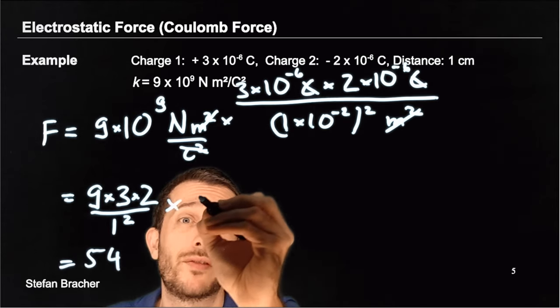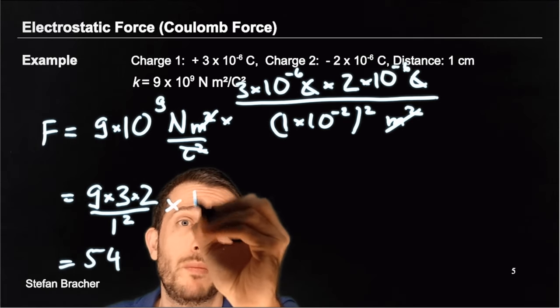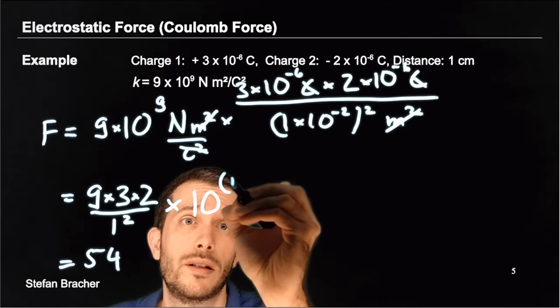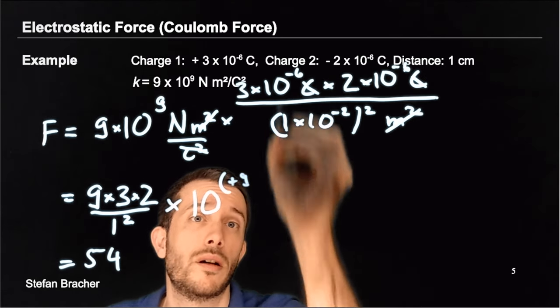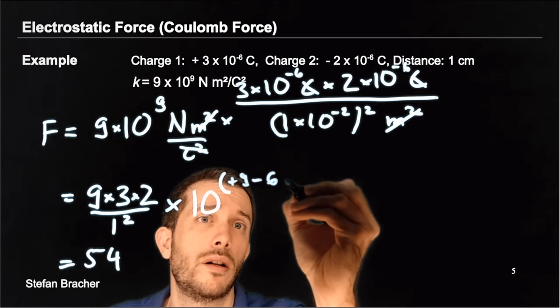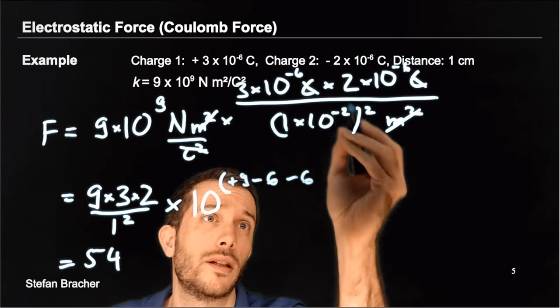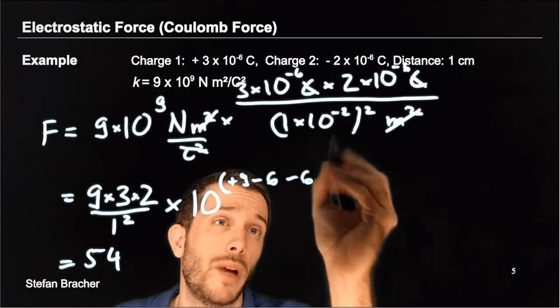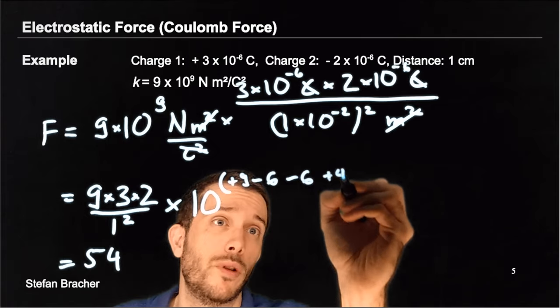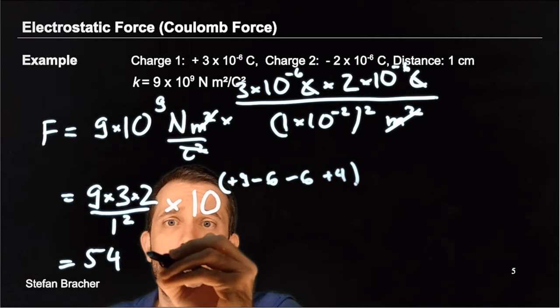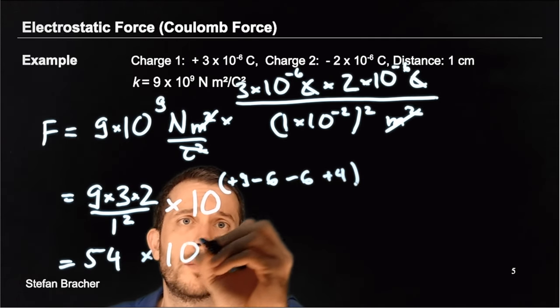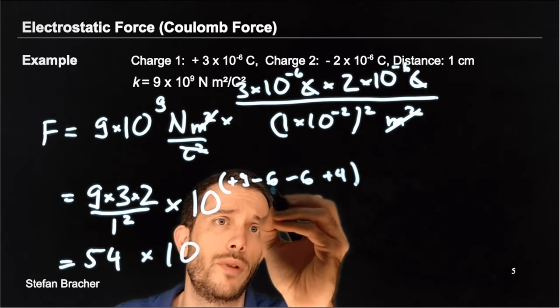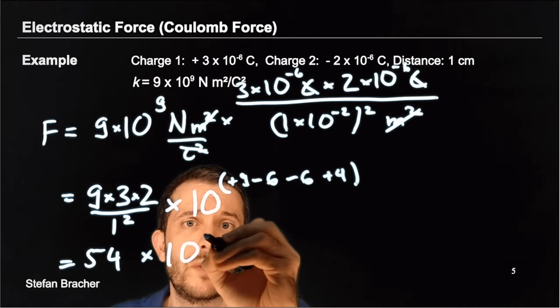And then for the powers of 10, I'm going one by one. So I have plus 9, minus 6, minus 6, and then minus minus 4, which is 2 times minus 2, so plus 4. And so that gives me 10 to the power of 9 minus 6 is 3, minus 6 is minus 3, plus 4 is plus 1.